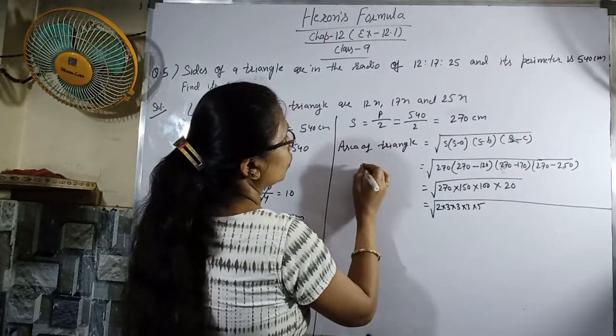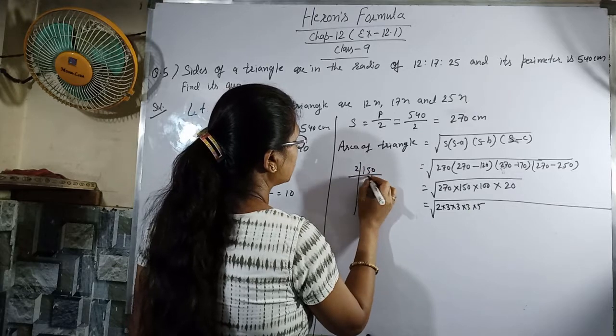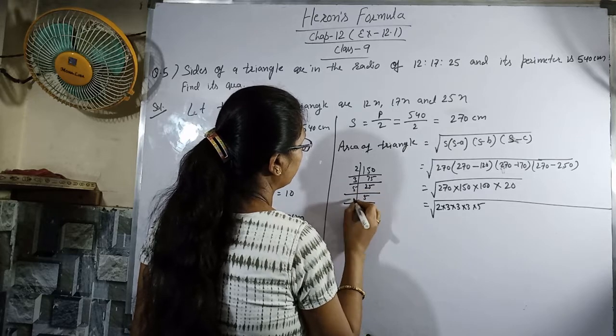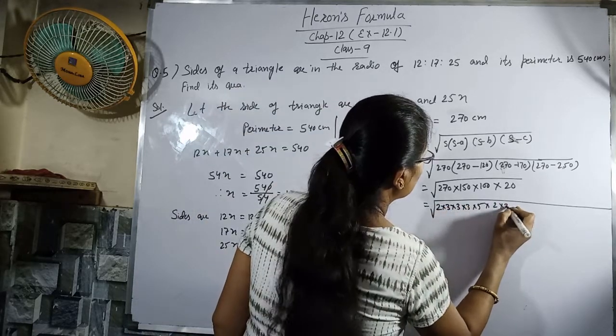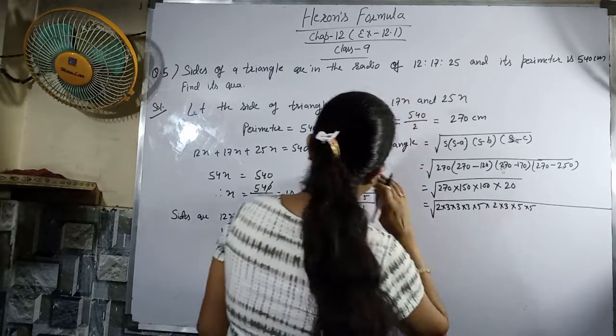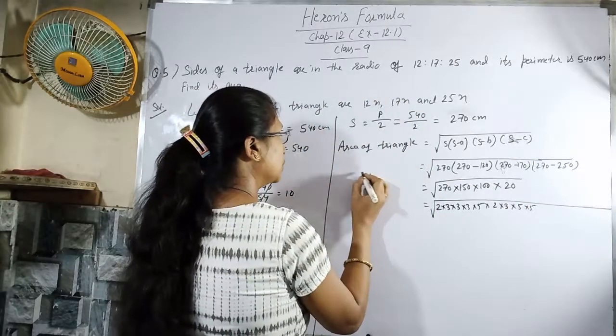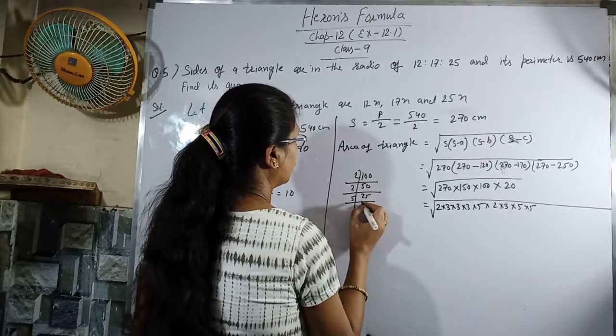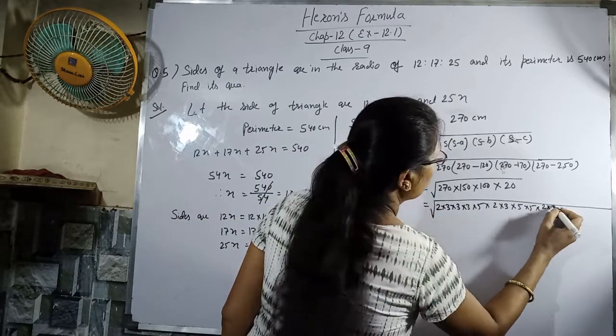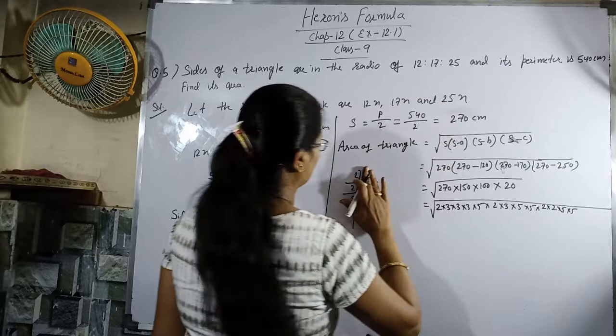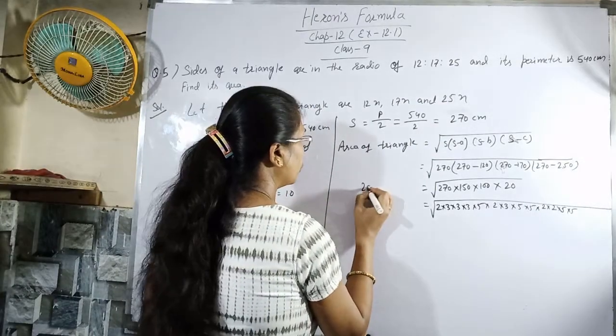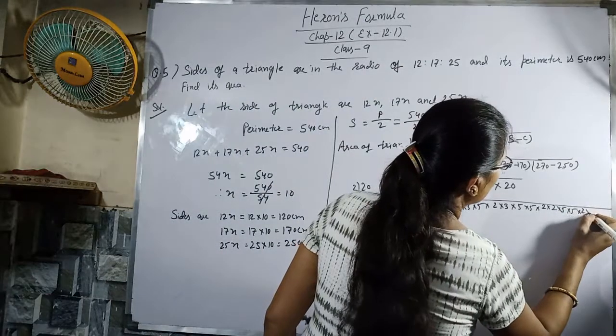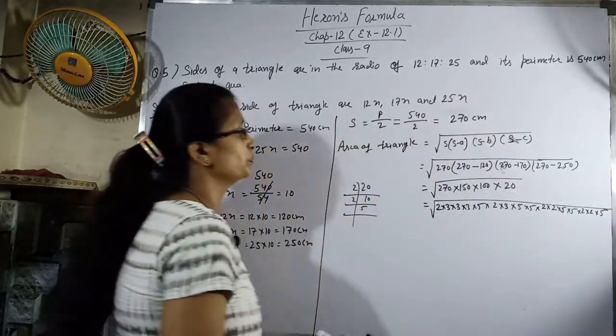Now let's factorize. 150 equals 2 times 75, which is 2 times 3 times 25, which is 2 times 3 times 5 times 5. Next, 250 equals 2 times 125, which is 2 times 5 times 5 times 5. And 20 equals 2 times 10, which is 2 times 2 times 5.